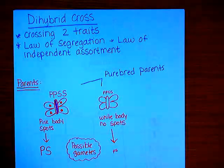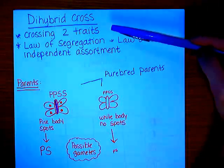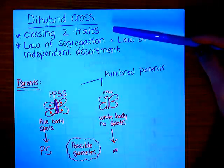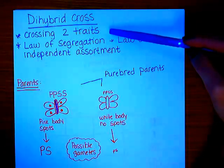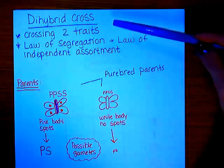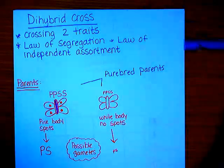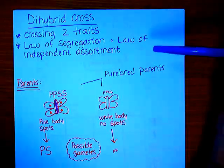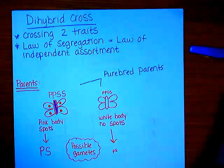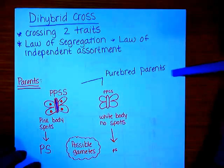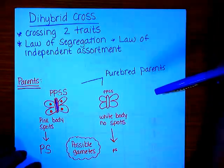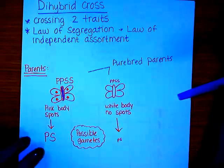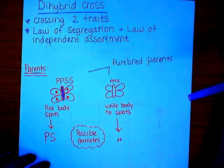In this lesson we're going to do an example of a di-hybrid cross. When we're doing a di-hybrid cross, it's similar to Punnett squares you may have done before, but rather than tracking just one trait, we're going to be tracking two traits. Di-hybrid crosses relate to the law of segregation and the law of independent assortment.